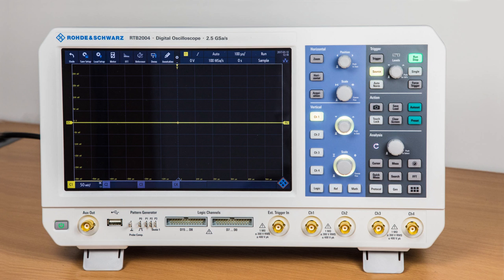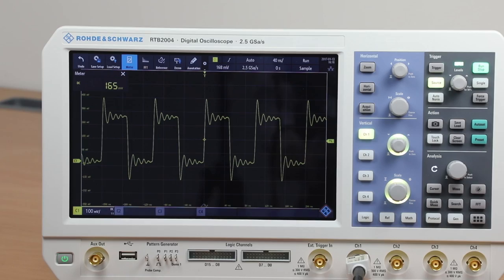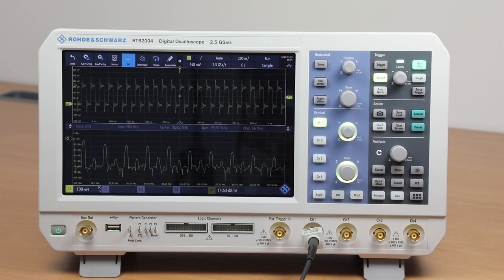In addition to this, many oscilloscopes have various other hardware capabilities such as a waveform generator, digital voltmeter, and the like. These can be very useful and save on cost and space, as additional instruments may not be needed.